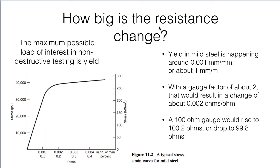So how big is that resistance change going to be? Well, the maximum possible load of interest in non-destructive testing is going to be when we would be getting up towards the yield strength of the material. We don't want to bend things permanently. So we're looking at only about one part in a thousand change in the size of something. So very small changes in size. That'll result in about twice as large a change in resistance. So if our gauge factor is about 2, we'll wind up with a change of about 0.02 ohms per ohm. Or if we had a 100 ohm strain gauge, it would rise up to about 100.2 ohms or drop down to about 99.8 ohms. So a very small change in resistance. And how are we going to be able to measure that?